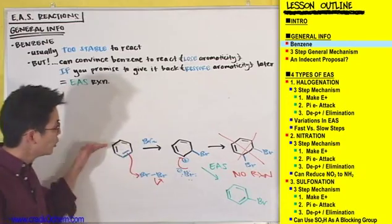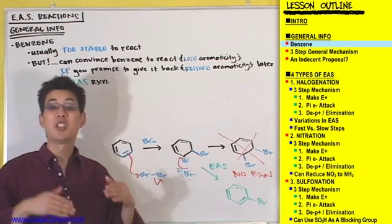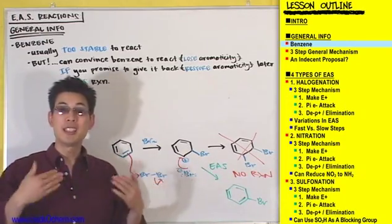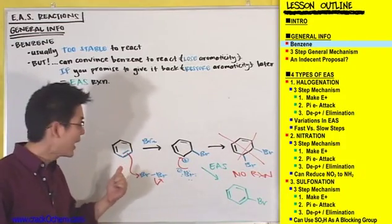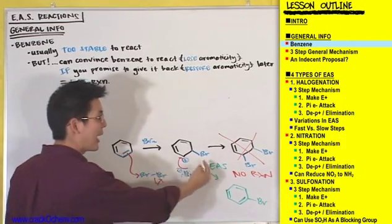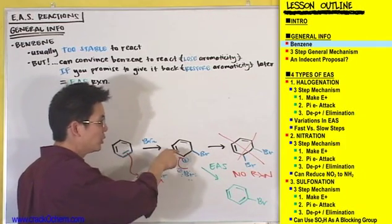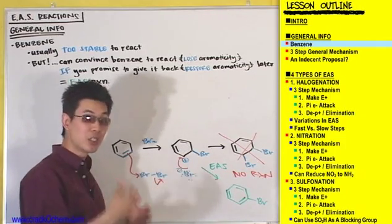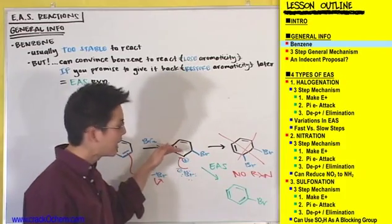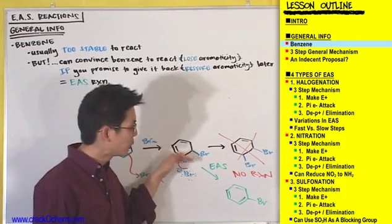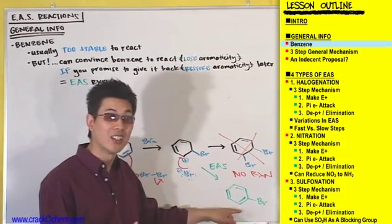Don't sweat the mechanism right now — we're not even discussing that yet. I just want you to get the general idea: to get benzene to react and add an electrophile, we get him to break his double bond, lose his aromaticity just for a second while we add on an electrophile, and then we give him back his aromaticity later.